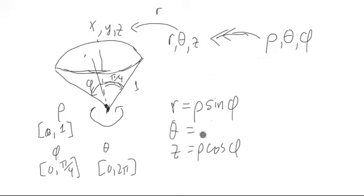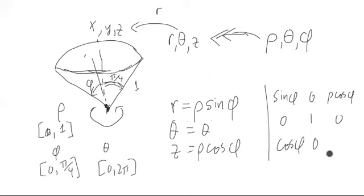The theta will just be itself in this conversion, which is nice to do this piecemeal. Let's take the derivative of all this with respect to first variable rho, and we end up getting sine phi, zero, and cosine phi. With respect to theta, we get zero, one, zero. With respect to phi, we get rho cosine phi, zero, negative rho sine phi.